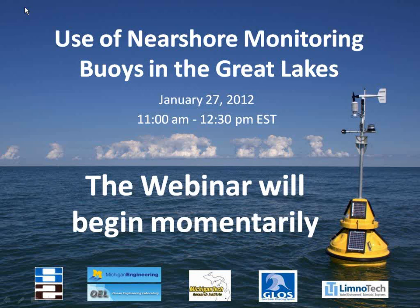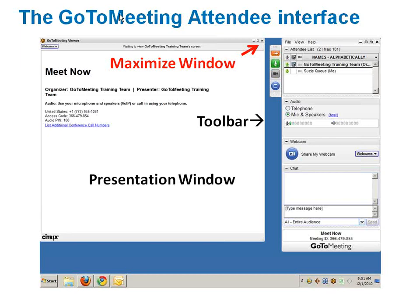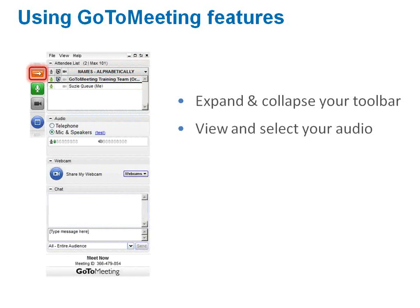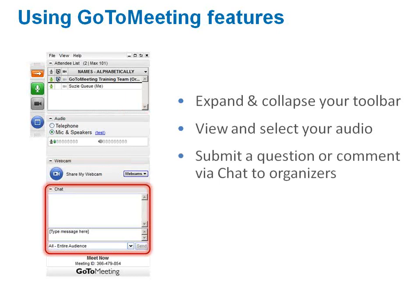First, I'm going to go over some of the GoToMeeting items. What you see here is the attendee interface with the presentation window and the toolbar, and you can maximize your window just like any regular window. You can also expand and collapse the toolbar using the orange arrow. There's also a box to view and select your audio. You can submit questions using the chat box. We are going to try to answer one or two questions after each presentation as time permits, and then we should have time at the end for a few more questions.